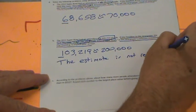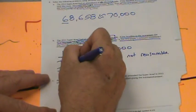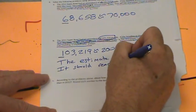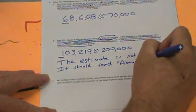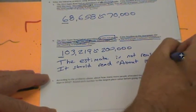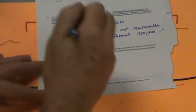It should read about 100,000. That's a much better estimate. We won't bother writing the rest. We're going to continue on with the next one.